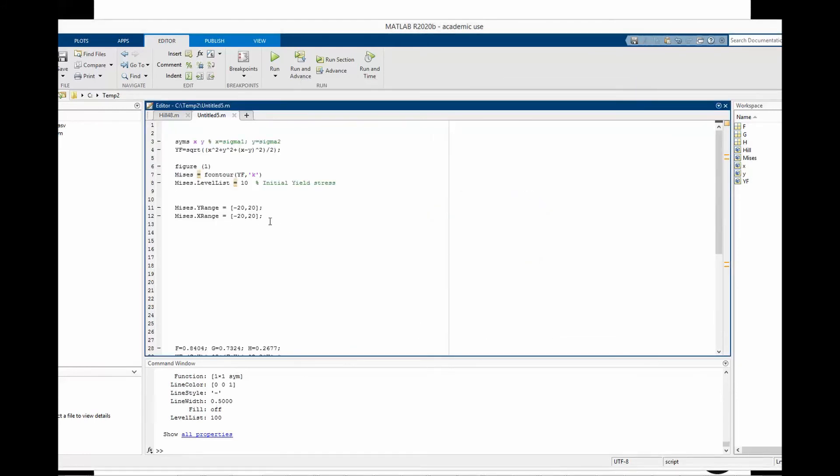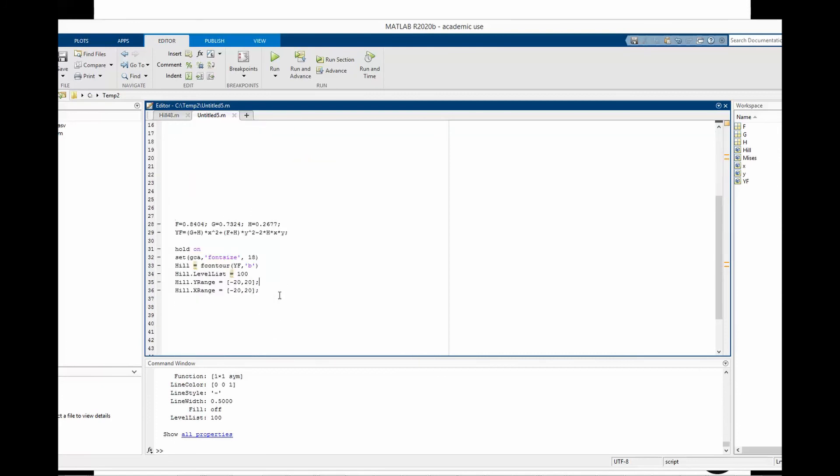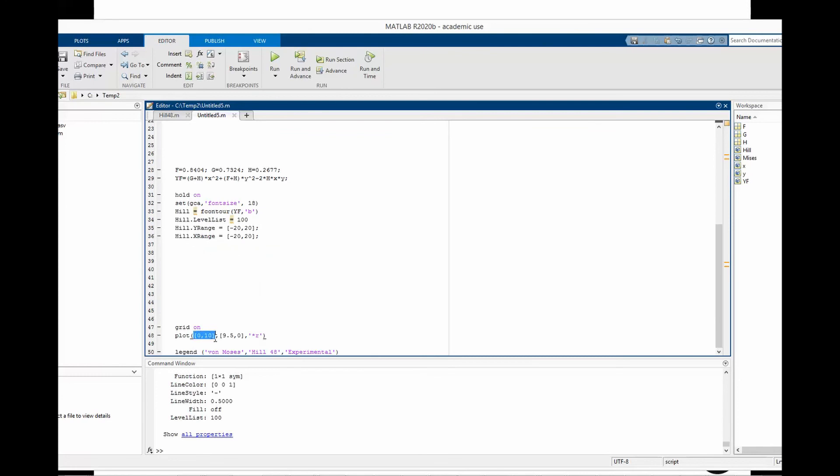Now for comparison we will plot von Mises yield surface, then this Hill yield surface together with these two yield points. First yield point is the initial yield limit of a zero degree orientation tensile test and the second yield point is the initial yield stress from a 90 degree orientation tensile test, and finally with some legend to distinguish between different plots.